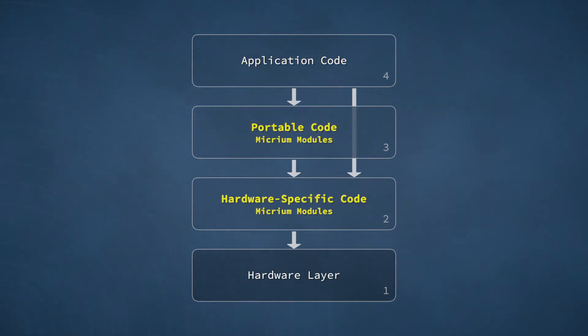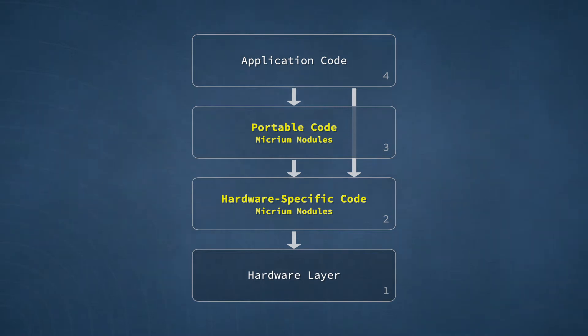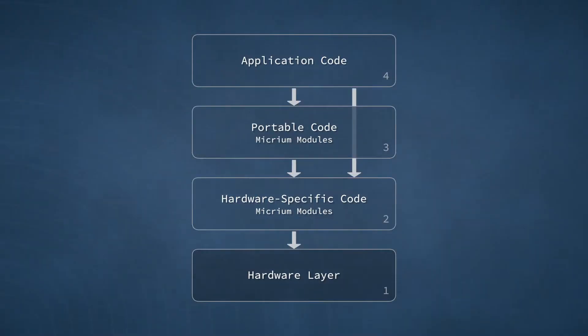Below the application code are two layers that represent the Micrim OS software and which implement the kernel services. This software is split into two layers in order to reflect our efforts to always deliver highly portable code. The Micrim OS modules consist primarily of C source code, and each module is responsible for performing a few hardware-specific operations. The code that implements these hardware-specific operations is always kept separate from the portable portion of the module. So, in the third layer, just below the application, is the portable code. This implements most of the API functions that would be invoked by your application.